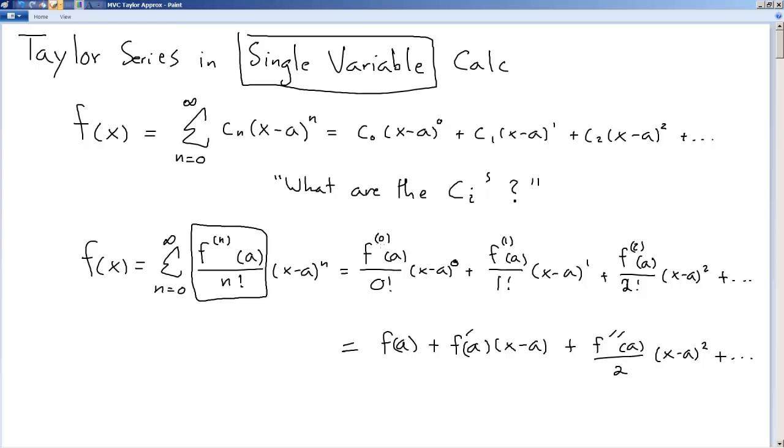The zeroth derivative of the function is actually just the function itself and 0 factorial is 1. And of course anything raised to the 0 power that itself is not 0 is equal to 1 as well. So you ended up with this expression for Taylor series approximating any continuous function centered at x equals a.